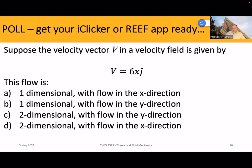Here's our first question. We have a one-dimensional velocity acting in the Y direction — we know that because we have the j unit vector included. Suppose the velocity vector V in a velocity field is given by V equals 6X j-hat. The question is: is this a one-dimensional flow in the X direction, one-dimensional flow in the Y direction, two-dimensional flow in the Y direction, or two-dimensional flow in the X direction?